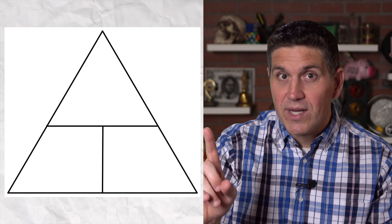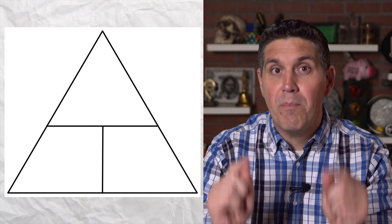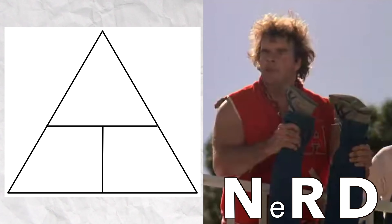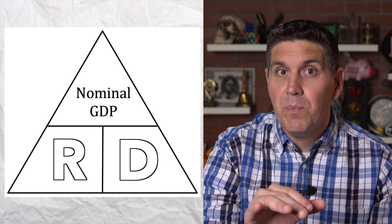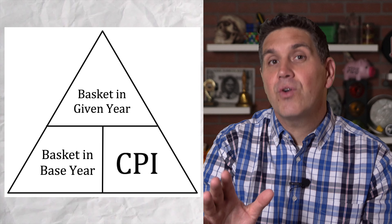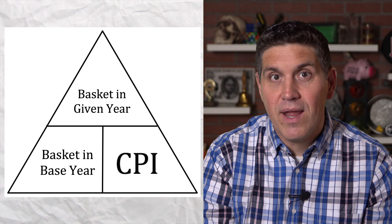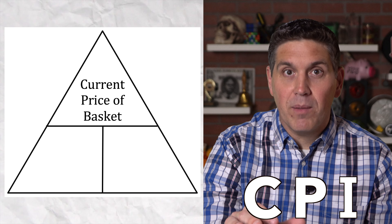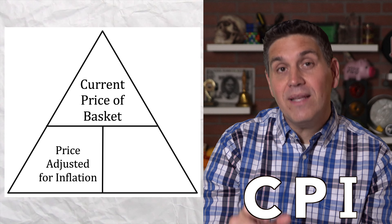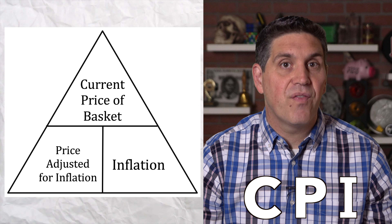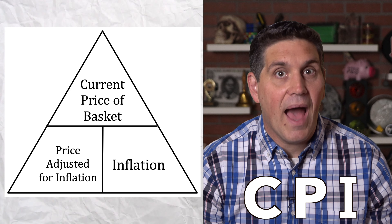And one more trick to help you set up this triangle — I want you to remember the acronym NERD: the Nominal GDP, the Real GDP, and the Deflator. And to remember the CPI triangle, just remember CPI: the Current value of the market basket, the Price adjusted by inflation — that gives you the amount of inflation, the CPI.